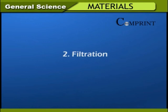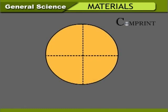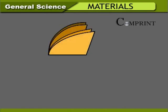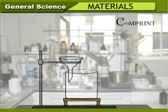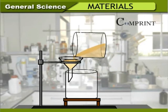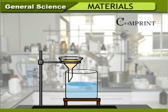2. Filtration: Take a glass of water and add some mud. Take a filter paper, cut it into a circular shape, and fold it. Make the inner walls of the funnel wet so that the filter paper sticks to it. Pour muddy water into the filter paper. Mud particles settle on the filter paper placed in the funnel, and clean water passes into the beaker through the holes. The dirty particles on the filter paper are called residue; the clean water collected in the beaker is called filtrate.